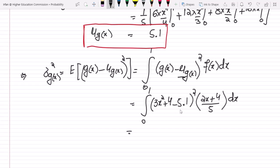Calculating it and finding it out, we will get the integral from 0 to 1 of 3x square minus 1.1 squared times 2x plus 4 divided by 5 dx.